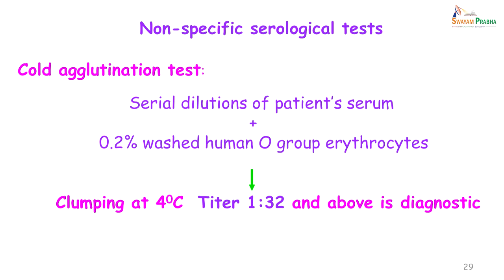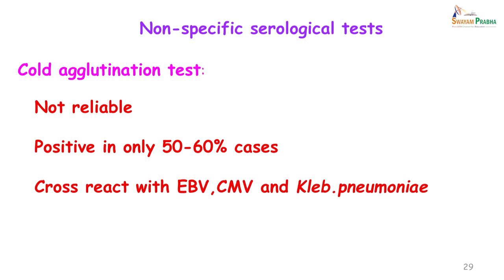The cold agglutination test is a test in which we take serial dilutions of the patient's serum to which we add O group erythrocytes. This is then incubated at 4 degrees Celsius — that is the 'cold' part of the cold agglutination test — and a titer of 1 in 32 or above is diagnostic of Mycoplasma pneumoniae. The problem with this test is that it is not reliable, positive in only about 50 to 60 percent of cases, and cross-reacts with Epstein-Barr virus, cytomegalovirus and Klebsiella pneumoniae infections. Antibodies against these organisms may also give a false positive cold agglutination test.